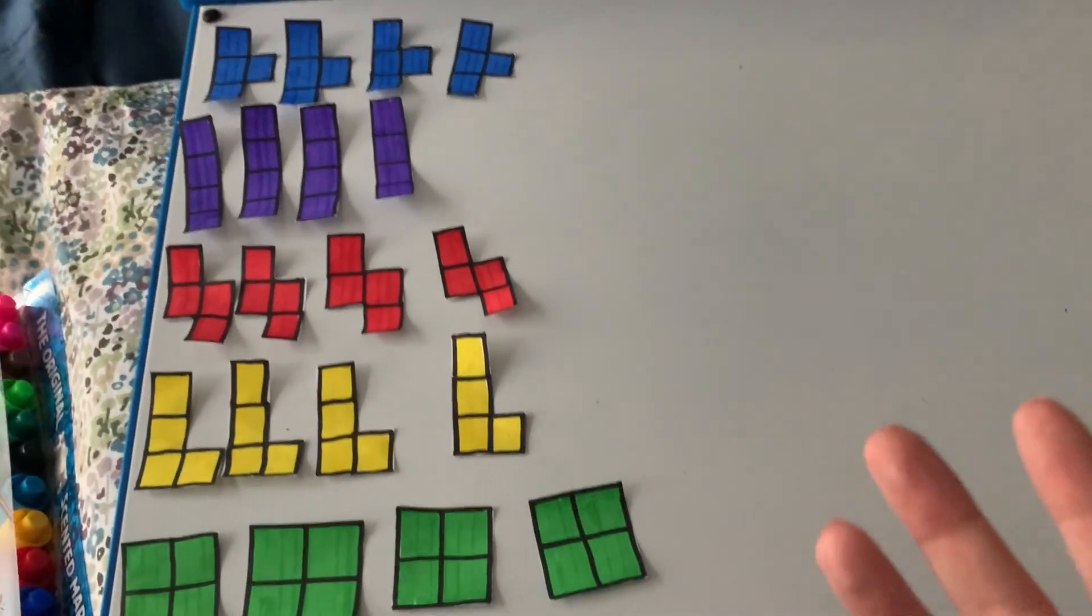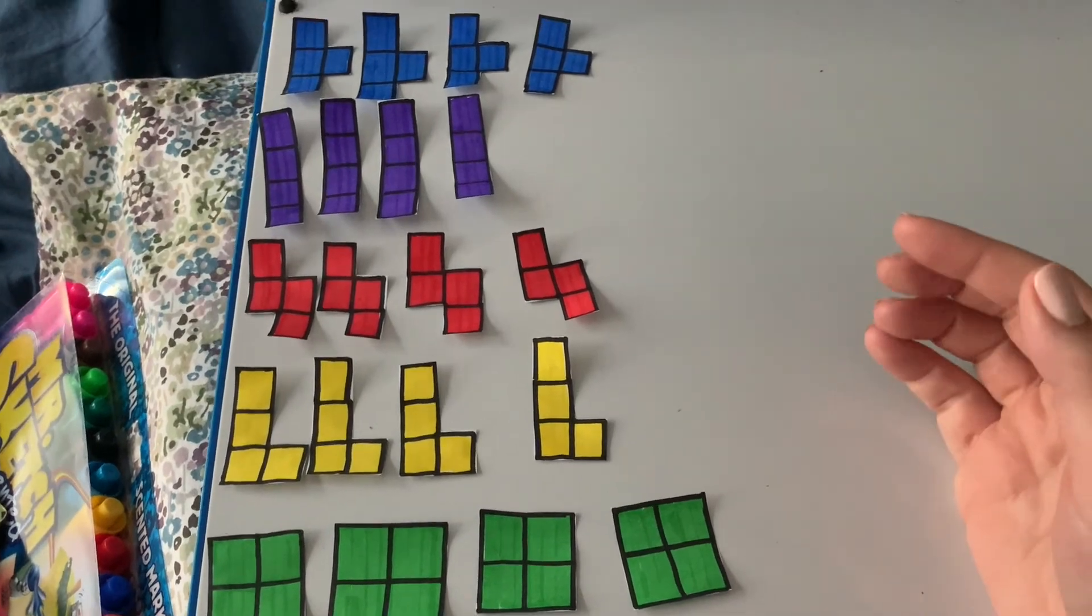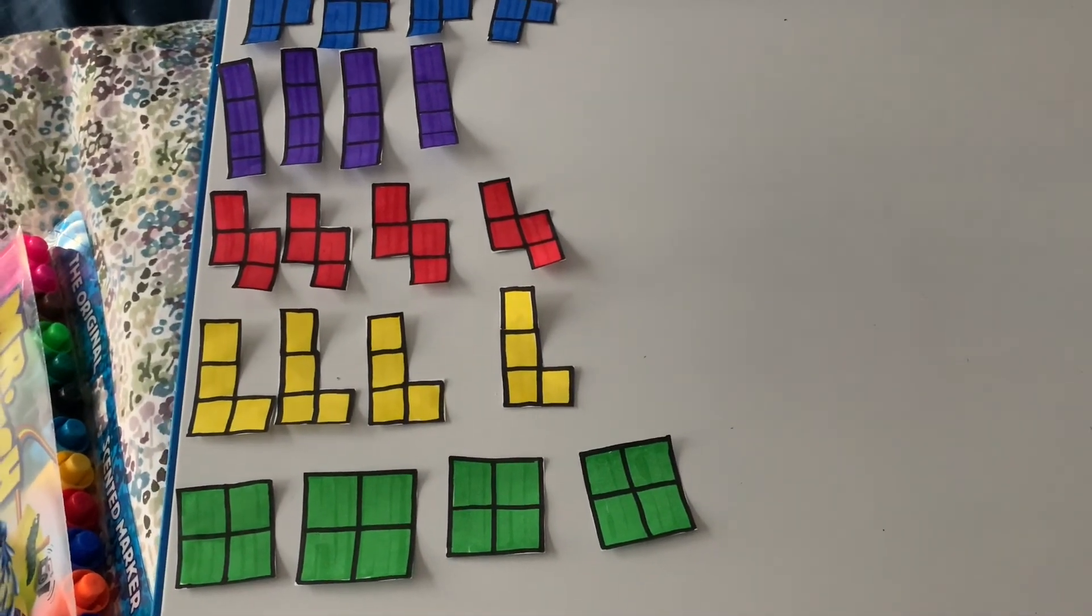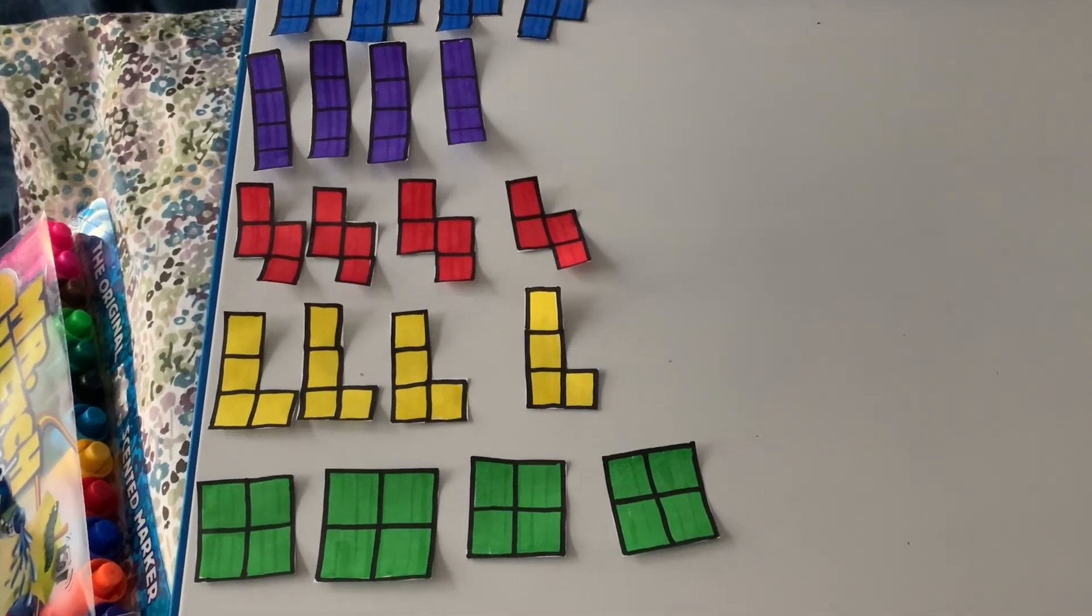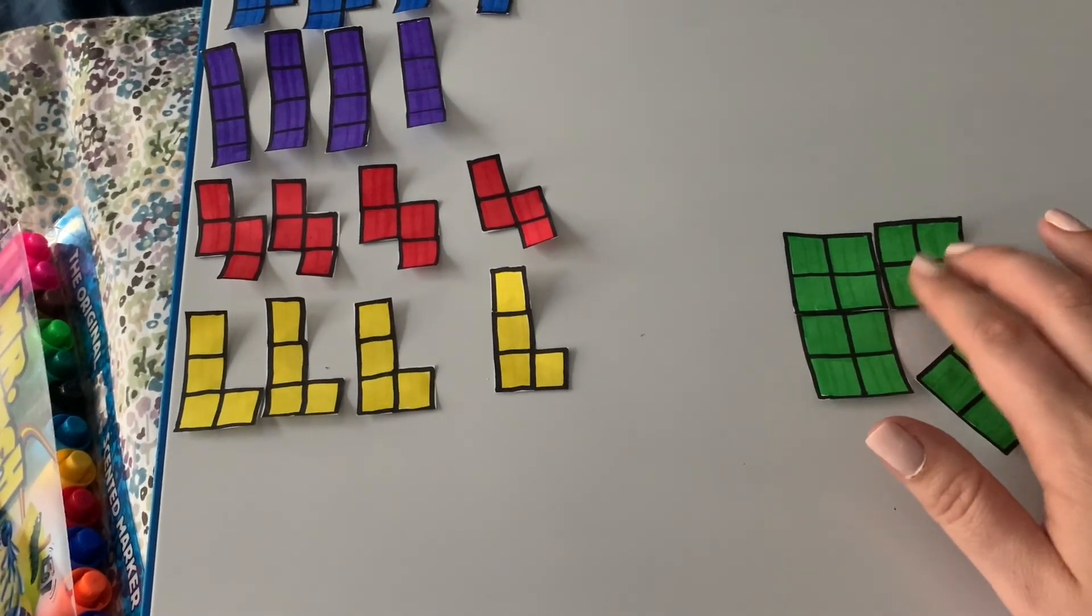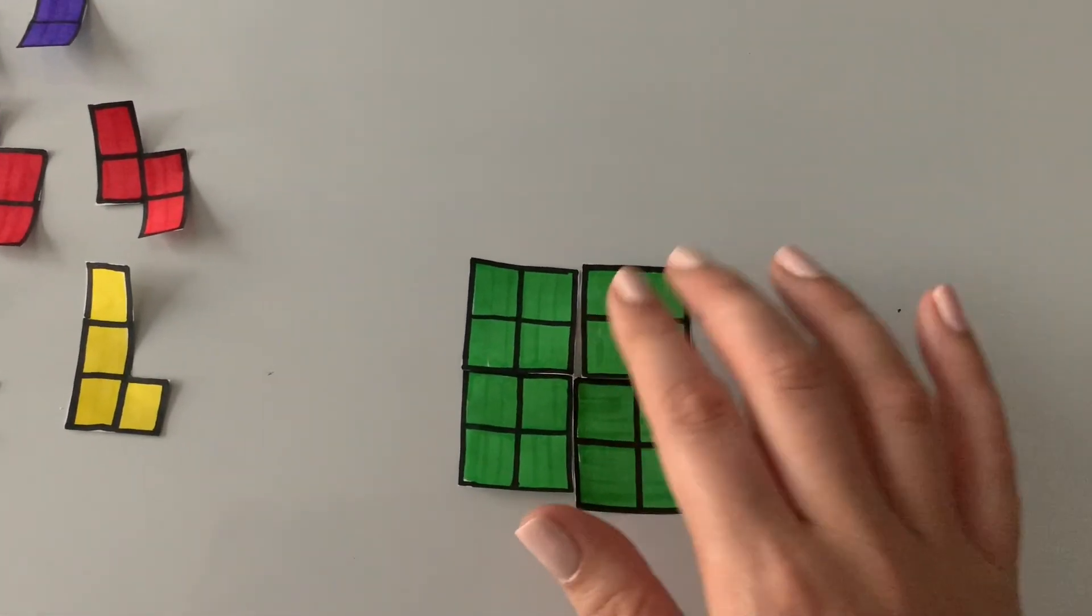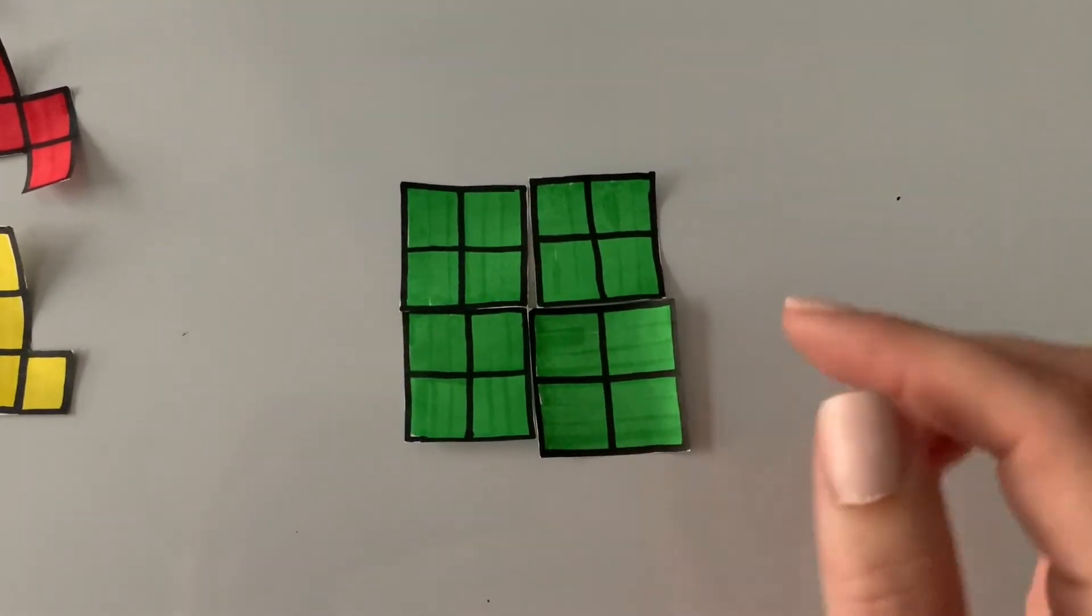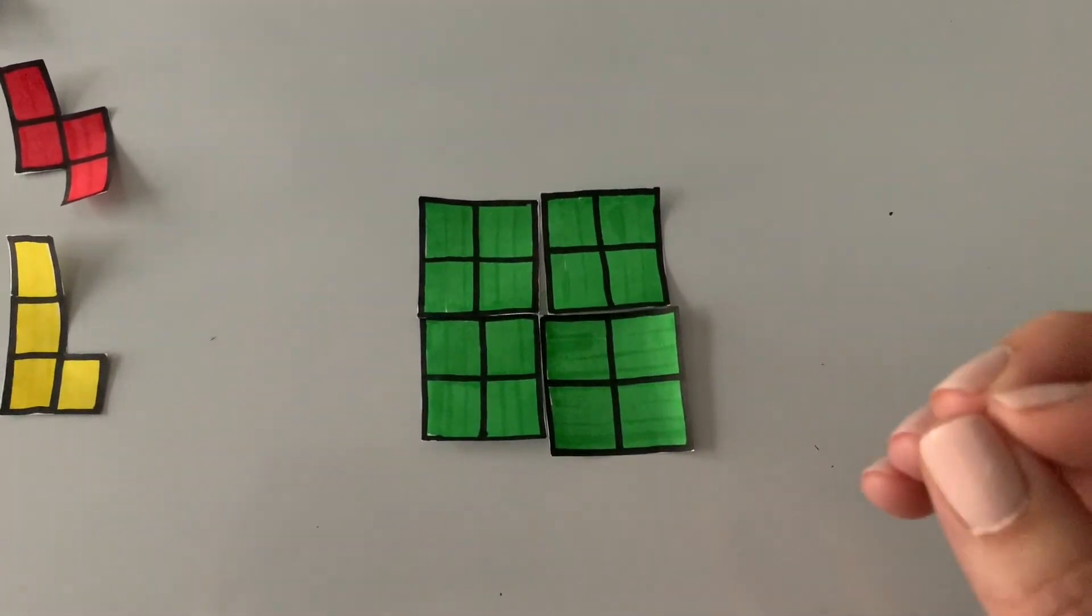So I want you to look at these tetrominoes and I want you to realize they all have an area of four. Okay there are four cubes in each of these tetrominoes. So if I asked you to make a rectangle with a square unit of like 16, you would just need like you could do these four. And if you put these on top of one another, this one is just so much bigger, it's so awkward. A square is a rectangle but a rectangle is not a square. So this is considered a rectangle even though it's a square because it's got the same number on each side. So this is a rectangle of 16 square units.